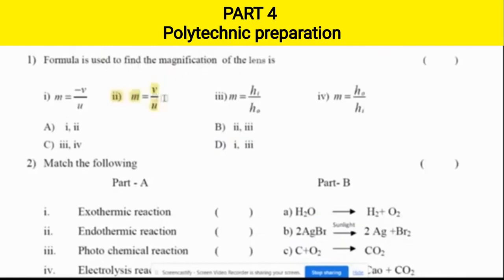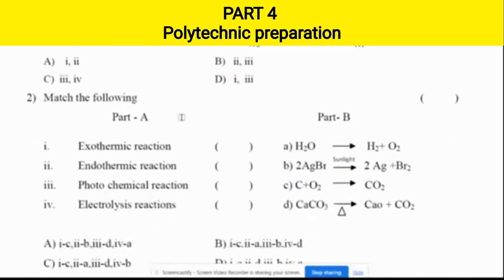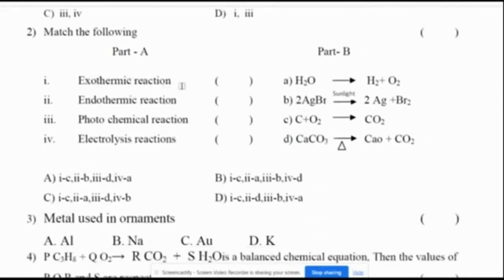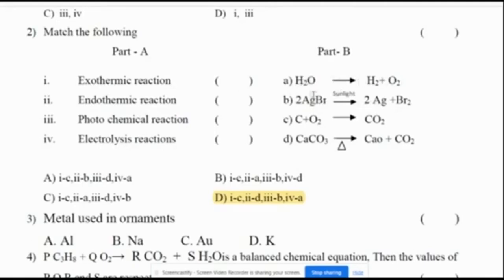Bisphenol is used in preventing corrosion. The formula used to find the magnification of lenses is M = V/U. Match the following — exothermic reaction: C plus O2 gives CO2; endothermic reaction: CaCO3 gives CaO plus CO2; photochemical reaction: 2AgBr gives 2Ag plus Br2; electrolysis reaction: water is split into hydrogen and oxygen. The correct option is D.